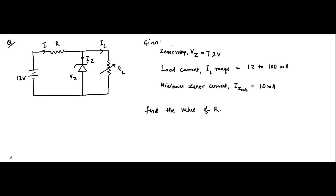This is another question on Zener diode. This circuit involving a Zener diode is different from the circuits discussed in previous questions. Here the input voltage is fixed at 12 volts and the load resistor is variable. The exact value of the resistance is not specified. The Zener voltage or breakdown voltage of this diode is 7.2 volts, and the variation of the load current IL is within the range 12 to 100 milliamperes.